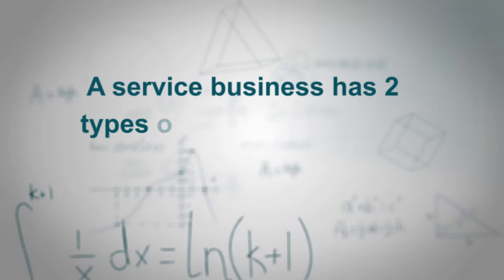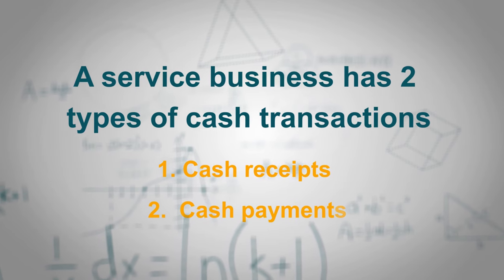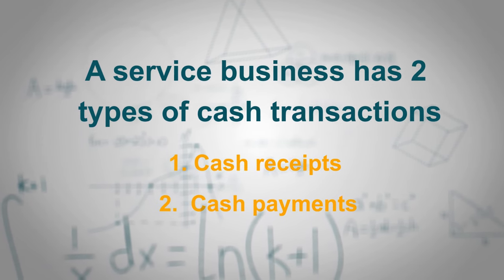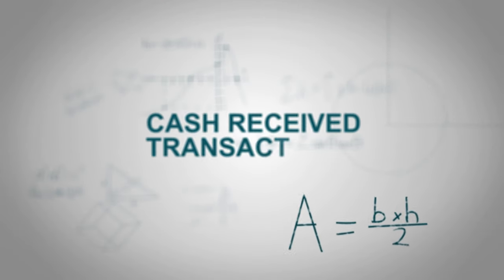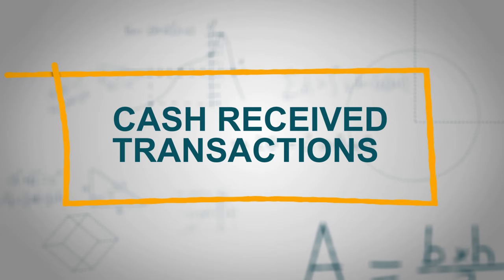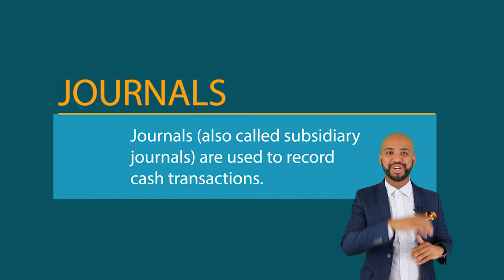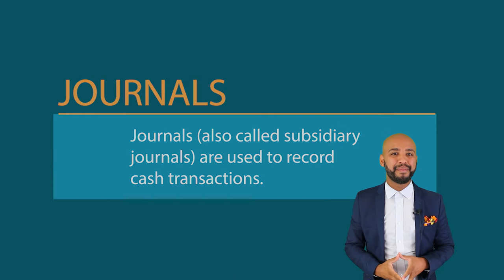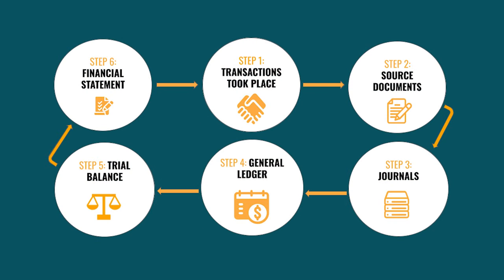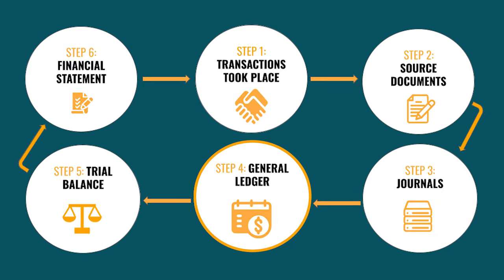A service business has two types of transactions that take place, namely cash receipts and cash payments. But for today, we will only focus on the cash receipt transactions. Journals are also called subsidiary journals, and these journals are used to record transactions. They organize transactions into different types to simplify the orderly transfer of information to the next step in the accounting cycle — for example, the ledger.